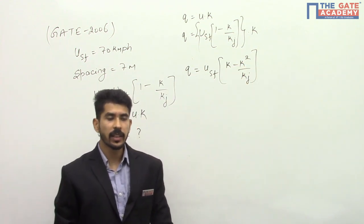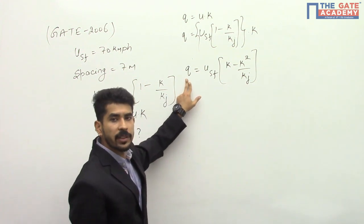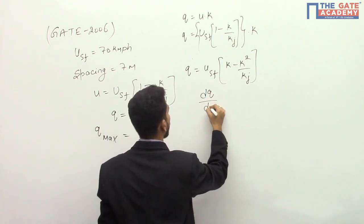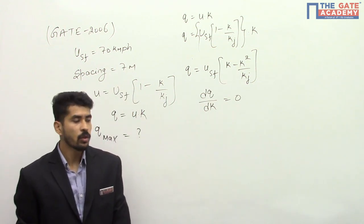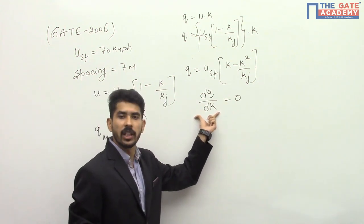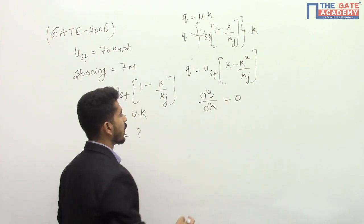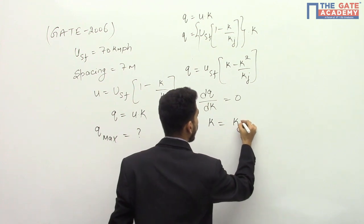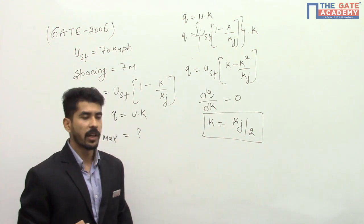Now what he is asking is what is q max. We know that if we want to maximize q, we will differentiate this. That means dq divided by dk equal to 0. When you differentiate this with respect to k equal to 0, we will get a relation between k and kj. k will be equal to kj by 2.